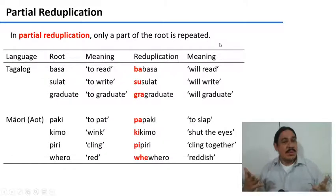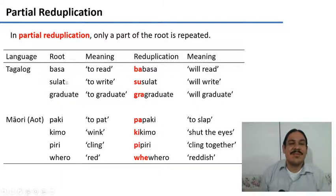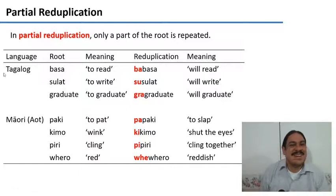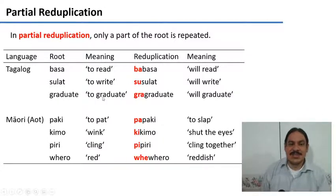It's more common to find partial reduplication, where only a part of the root is repeated. For example, we also see this in the verbs of Tagalog — there's a lot going on with the verbs in Tagalog, they're amazing. We have roots like 'basa', 'sulat', and even long words like 'graduate', meaning to graduate.